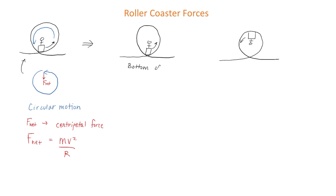Let's look at what happens when the rider is at the bottom of the loop. We'll draw a free body diagram. There will be the force of gravity pushing down on the rider and the normal force from the surface of the roller coaster pushing back up. The net force has to point up because that's towards the center of the circle.